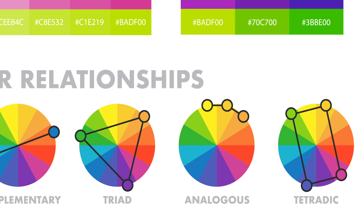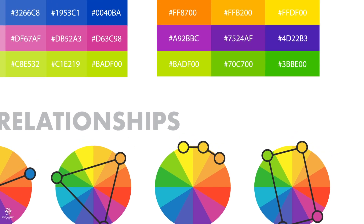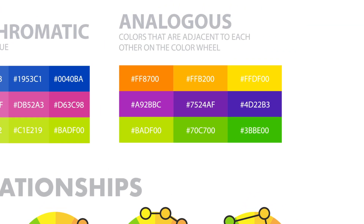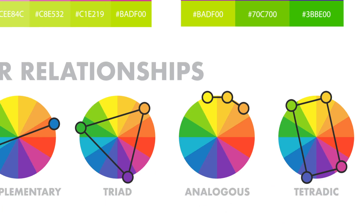Analogous colors are colors next to each other on the color wheel — for example, red, orange, and yellow. When creating such a color scheme, one color will dominate, one will support, and another will accent.